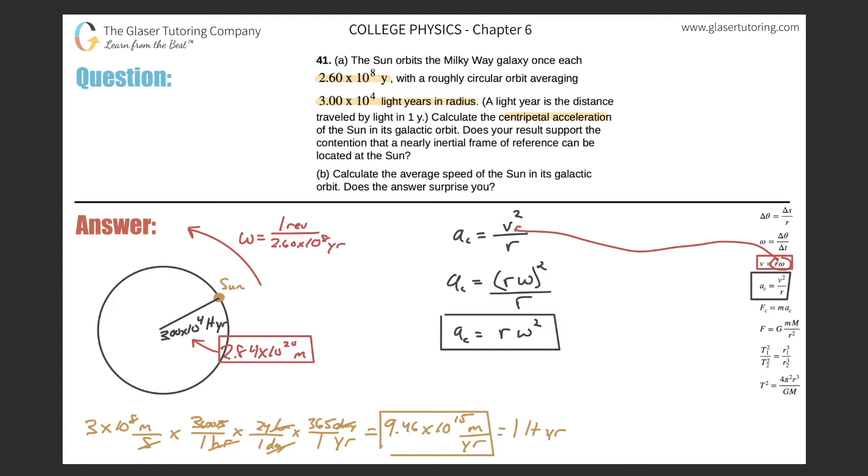Very good. So that is the radius in meters. And now we just have to get the angular velocity in radians per second, and then we can go about our business. So let's bring that on up here. One revolution for every 2.60 times 10 to the eight years. So one revolution is two pi radians. So there goes the revolutions. And now I just got to go from year all the way down to seconds. So I'll go to day first. So there's 365 days in a year.